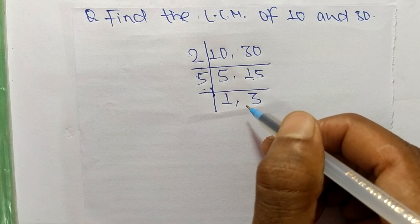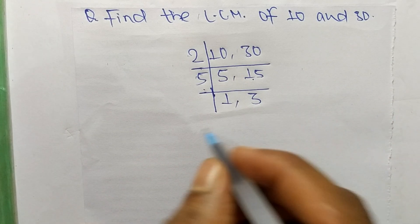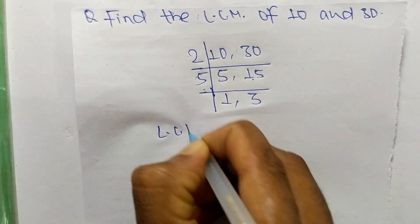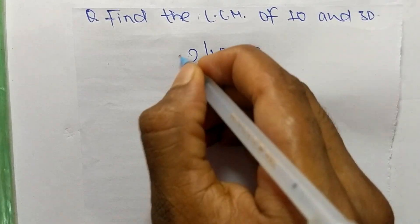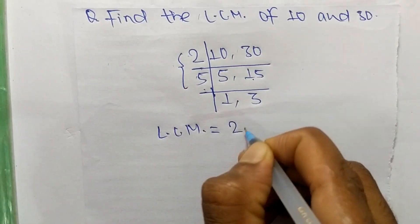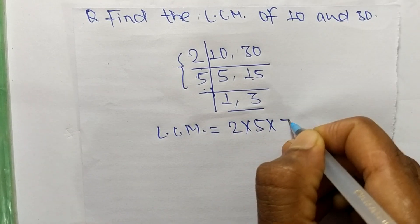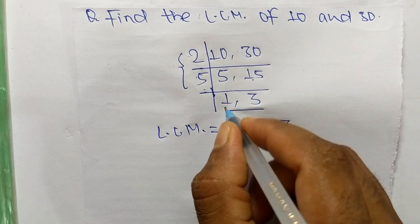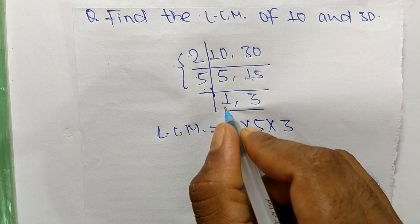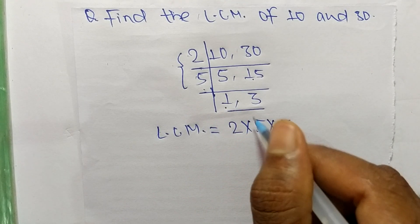Which are not exactly divisible by same number. So its LCM is equal to, from this part it is 2 times 5, and from this part it is 3. And we neglect 1 because by multiplying any number with 1 we get the same result.